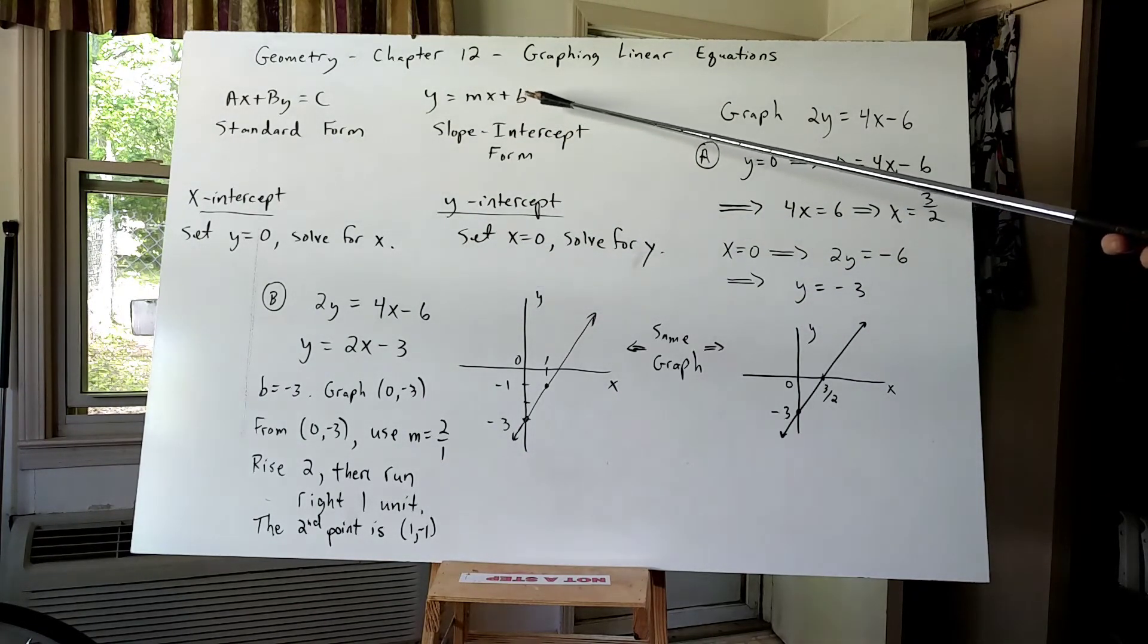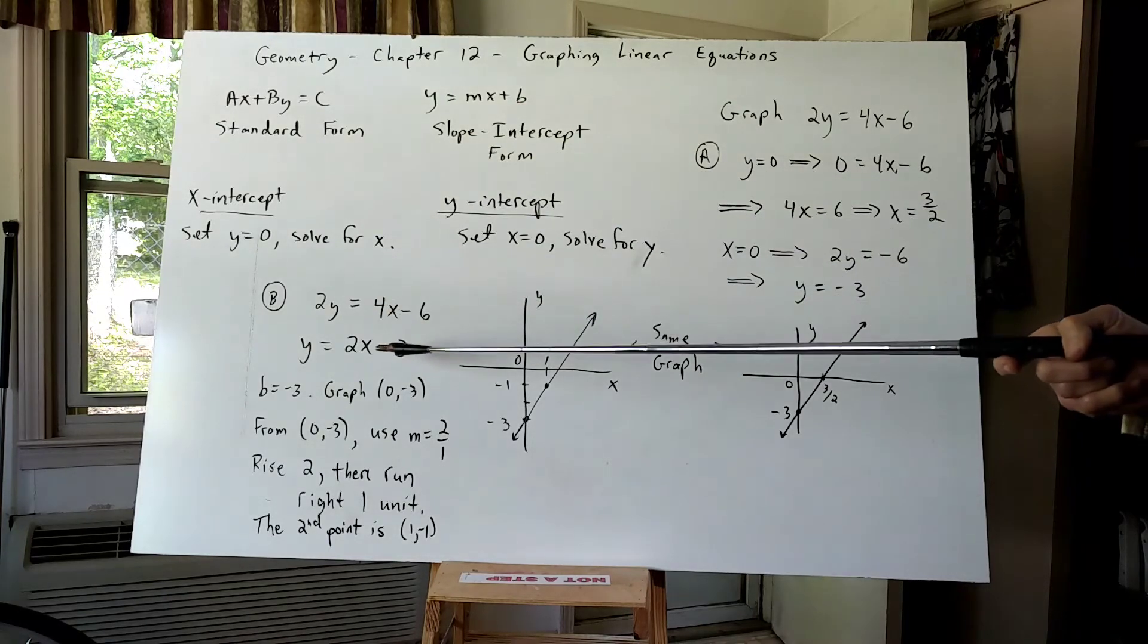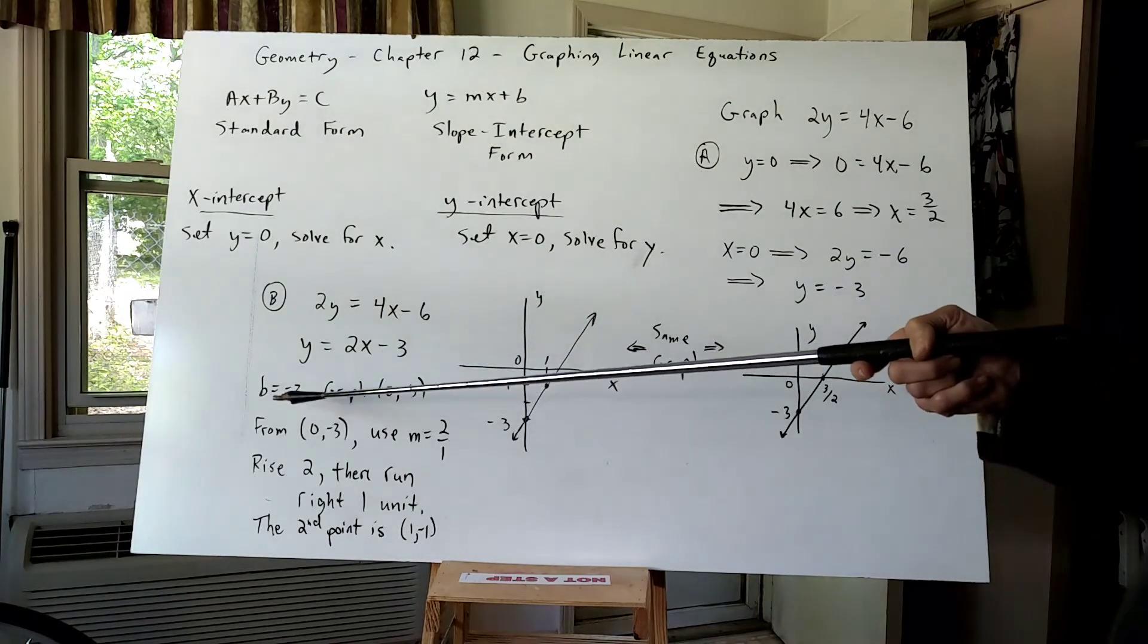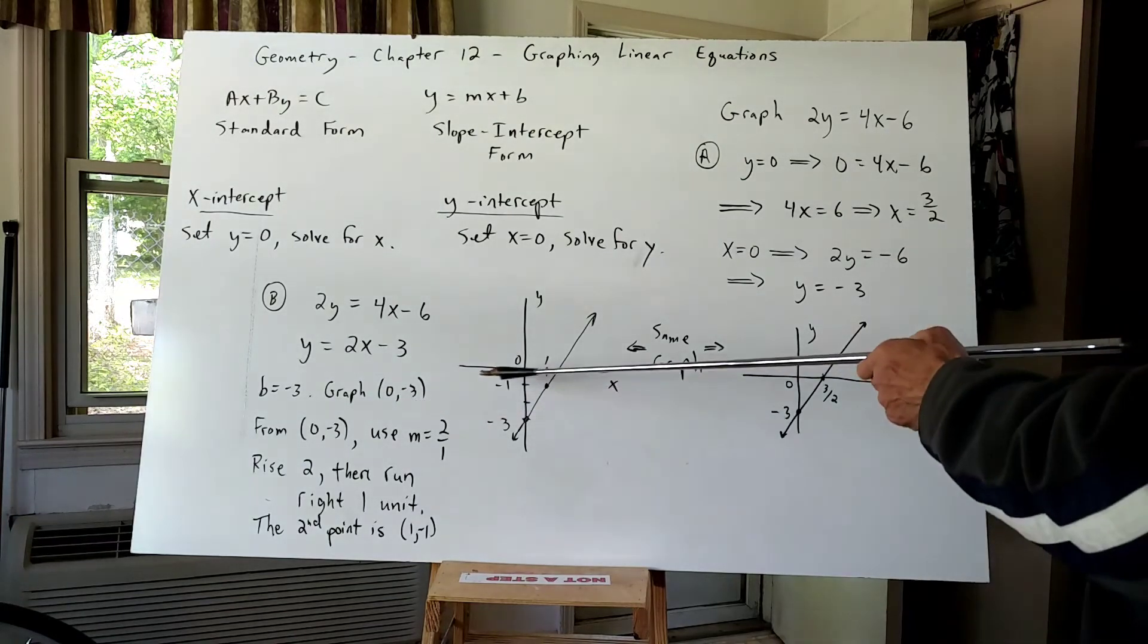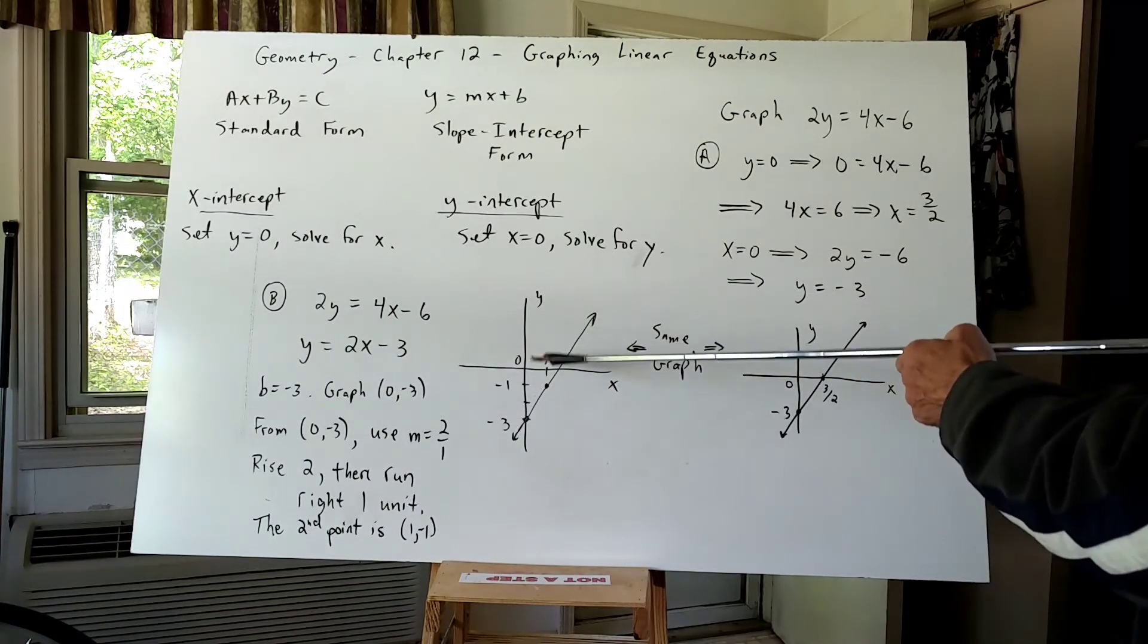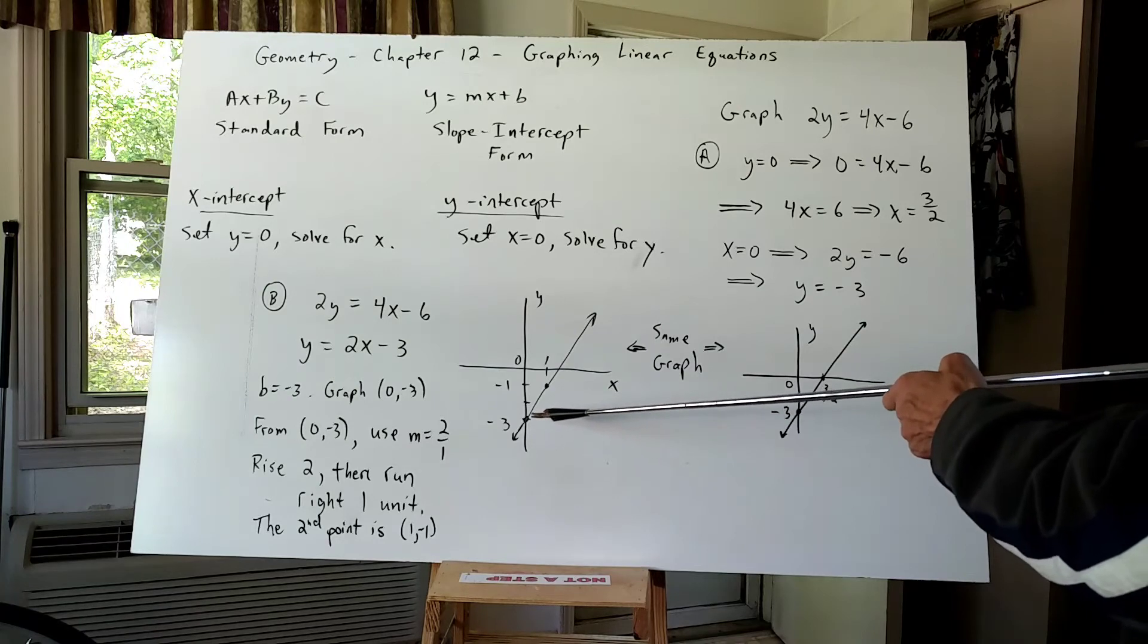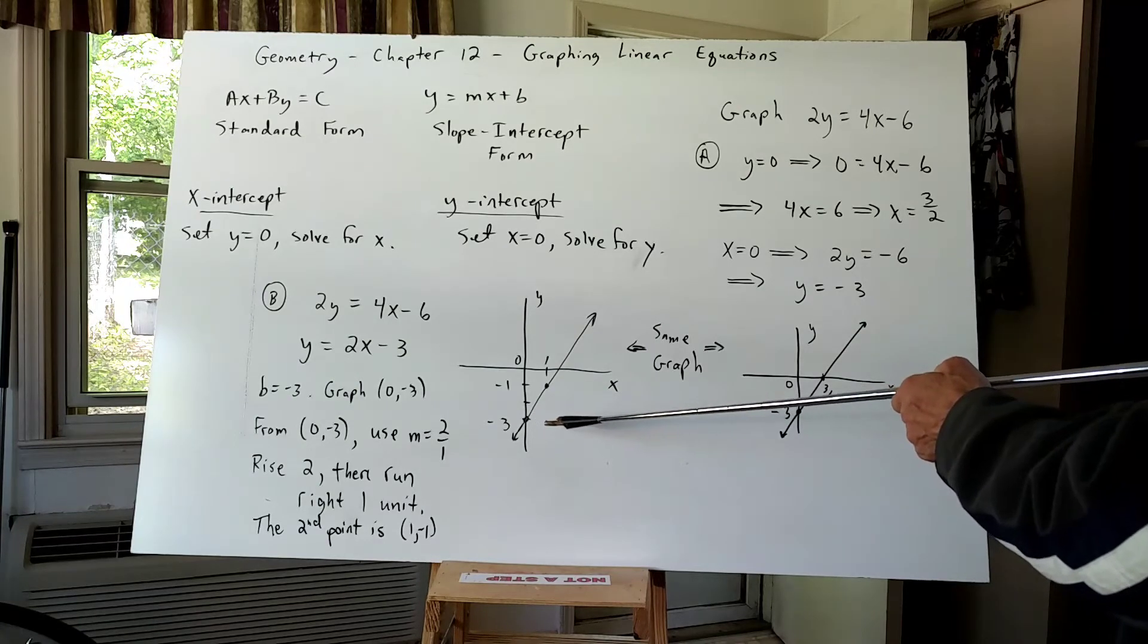For this form, B is the Y intercept. So in this case, B is negative three. So I'm going to graph the ordered pair zero negative three. This is my Y intercept. I go to the Y axis and go straight down three and plot that point. That's the point zero negative three.